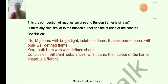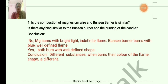Based on these observations, the question is: is the combustion of magnesium wire and Bunsen burner similar? Let us note this. The flame color and flame shape are different. No — magnesium burns with bright light and an indefinite flame, while the Bunsen burner burns with a blue, well-defined flame. Is there anything similar between the Bunsen burner and burning candle? Yes — both burn with a well-defined shape. Conclusion: when different substances burn, the color and shape of the flame are different.